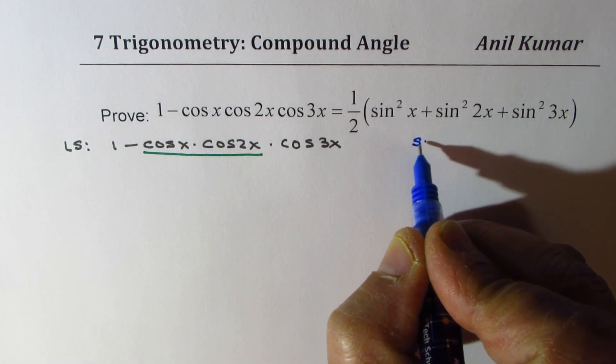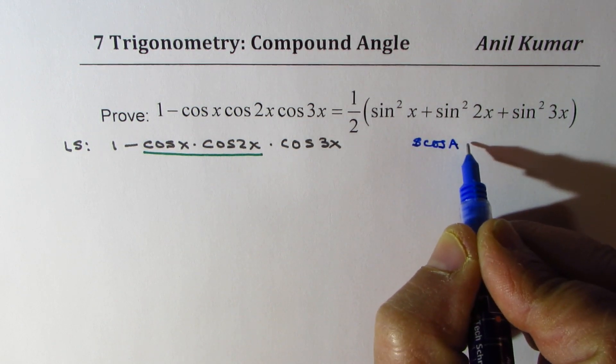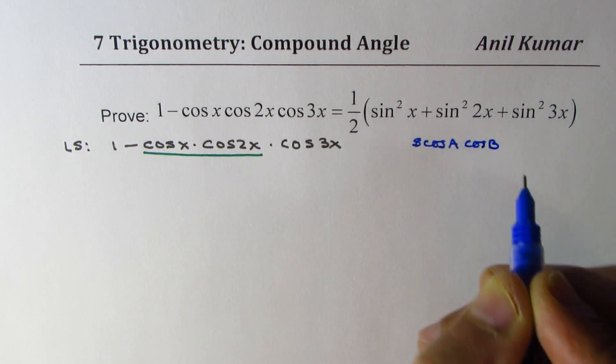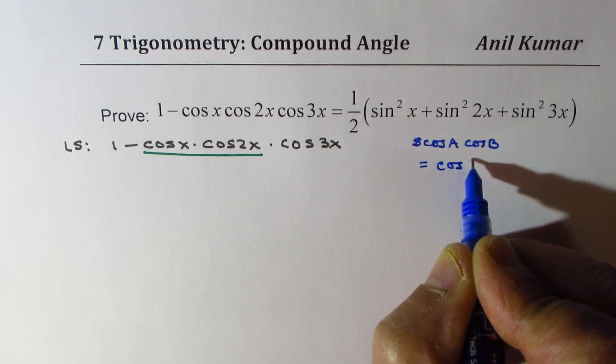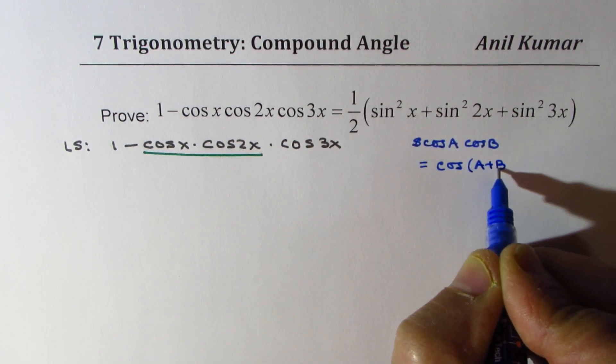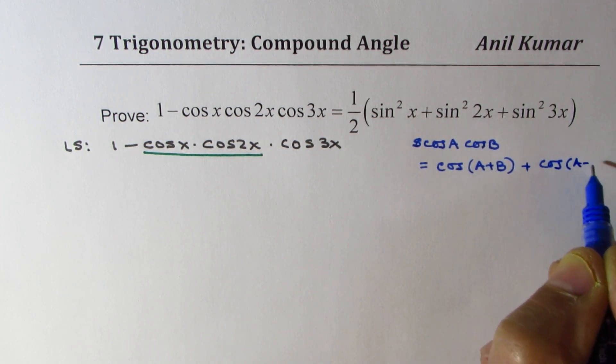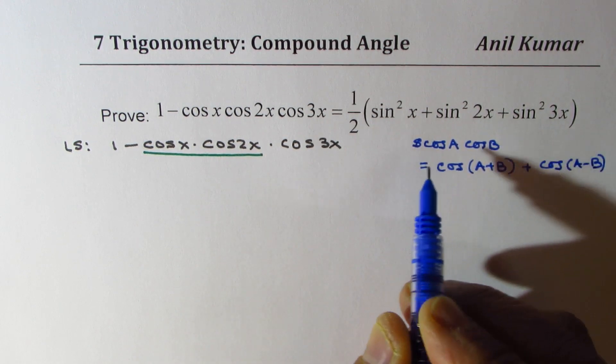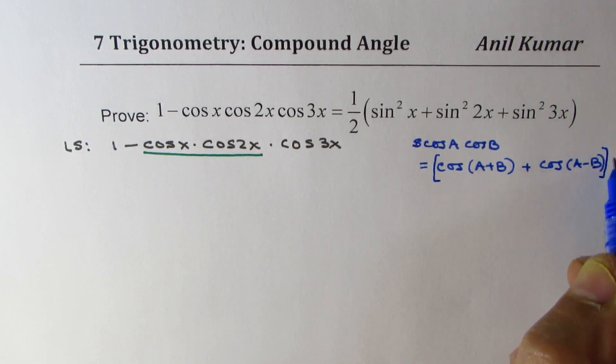We could write this as sum. So, you can say cos a cos b is equal to cos a plus b plus cos a minus b. Now, it is normally 2 cos a cos b. I'm going to write half here, times half.